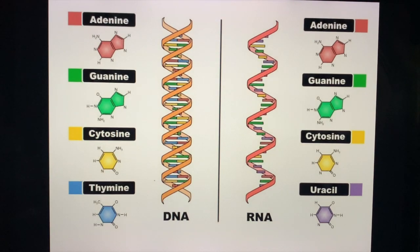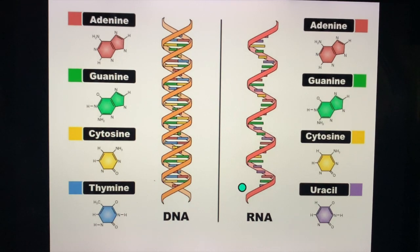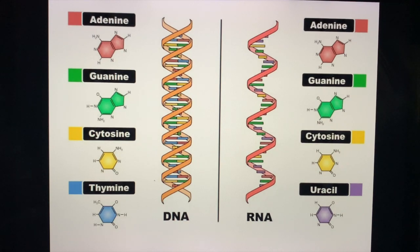Here is your double-stranded DNA — one strand on each side — while RNA is single-stranded, with emphasis on the presence of uracil in RNA.